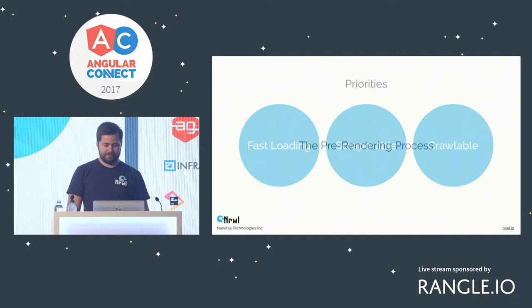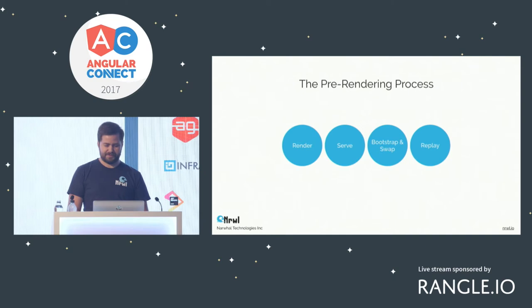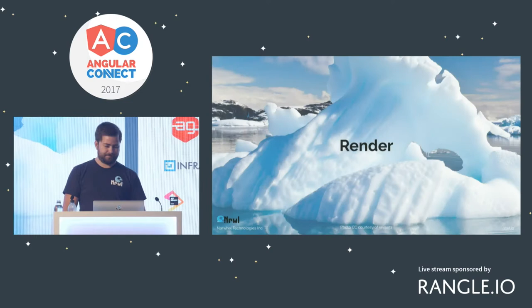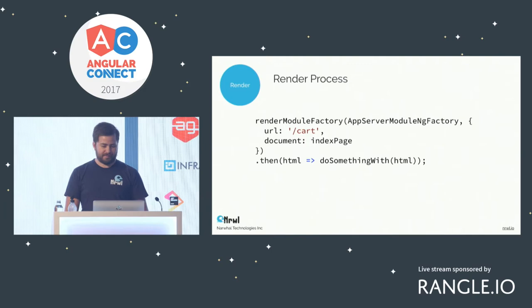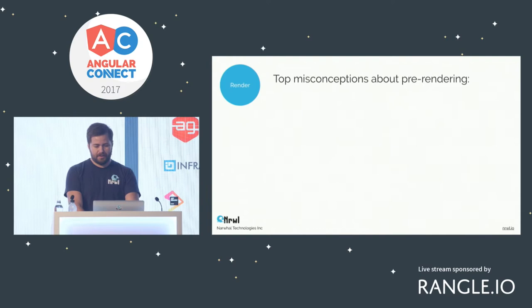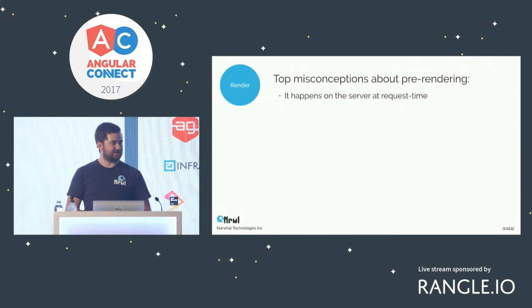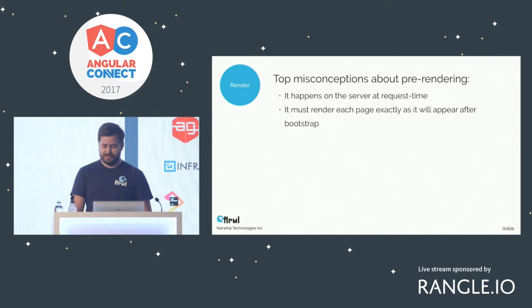Those are the priorities: fast, scrapeable, crawlable. Before talking about how to approach this, let's talk about the process of what it actually means to pre-render — what it looks like for you as a developer. There are basically four steps: you render something, you serve it, you bootstrap your application, and you can replay events. For the render step, Angular platform-server provides a render module factory function you pass a compiled module and some information like the URL you want to render, and it spits out a full string of HTML. A common misconception is that pre-rendering must run on a server at request time — but it's just a function you call, so you can call it anywhere, including at build time.